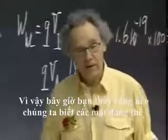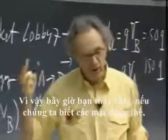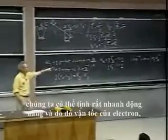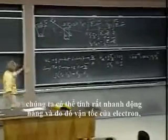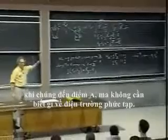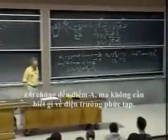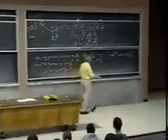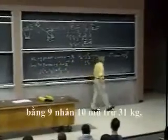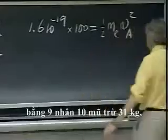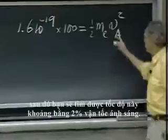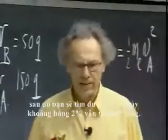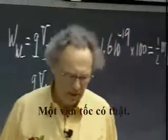You see that, accepting the fact that we know the equipotentials, we can very quickly calculate the kinetic energy and therefore the speed of the electron as it arrives at A, without any knowledge of the complicated electric field. If you put in the numbers for the mass of the electron, which is 9 × 10⁻³¹ kilograms, then you'll find that this speed is about 2% of the speed of light — a substantial speed.